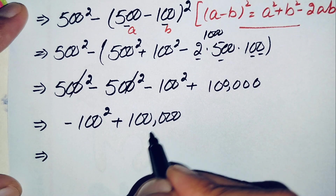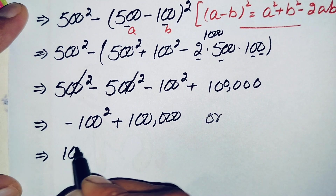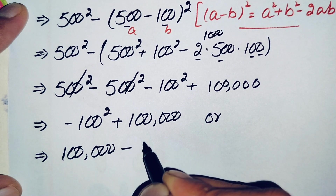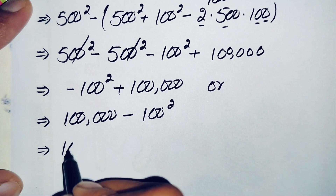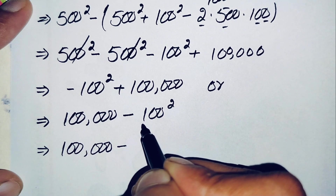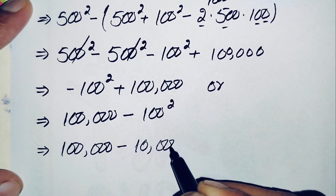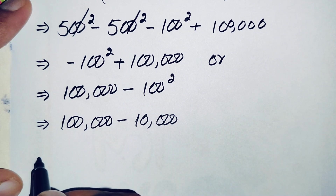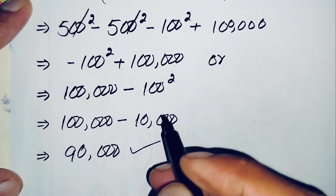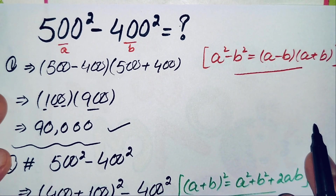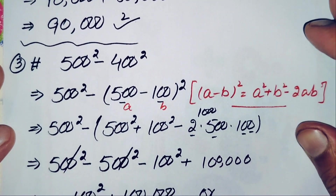Rearranging, we have 100,000 minus 100². The value of 100² is 10,000, so this becomes 100,000 minus 10,000, which gives 90,000. So 90,000 is our final answer using the third method. If you like this video, don't forget to subscribe to my YouTube channel for more step-by-step math videos. Thanks for watching.